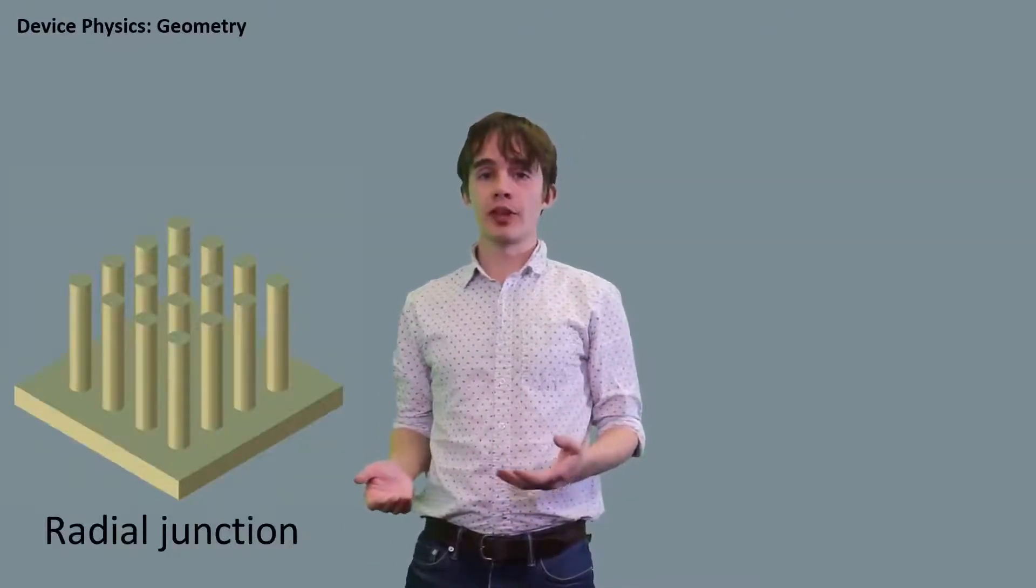Of course, it's still necessary to form a junction when using nanowires. There are two main configurations for PN junctions in these devices, and it all comes down to the geometry of these rods. In radial junction cells, the core of each cell is doped with either acceptors or donors. This core is then surrounded by a shell of material that's doped in the other direction, forming a junction. Outside of the nanowire, these materials are insulated from each other and contacted with separate electrodes to achieve carrier collection.